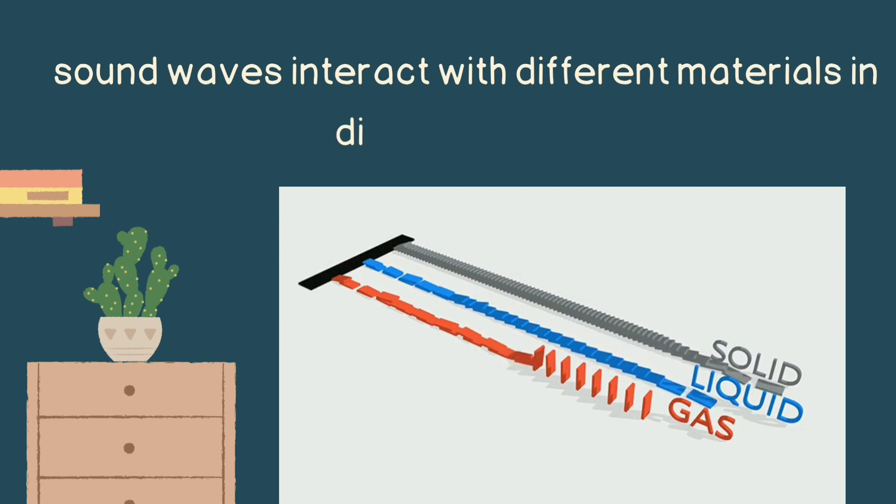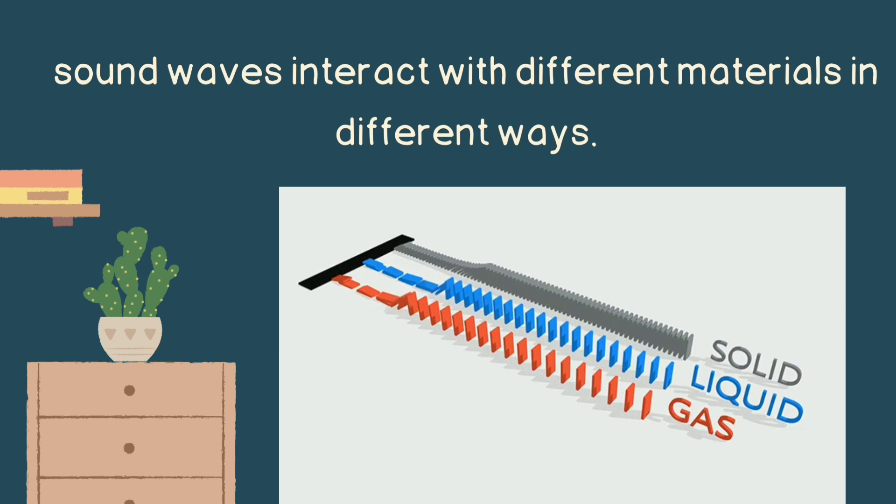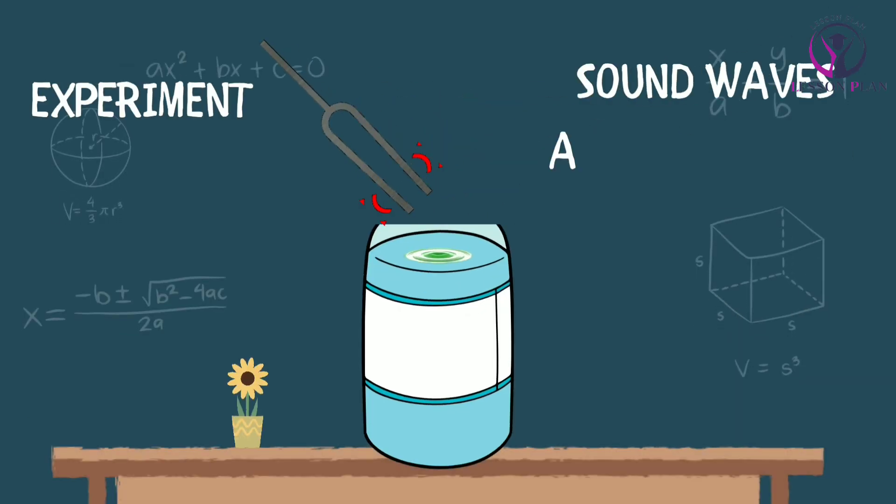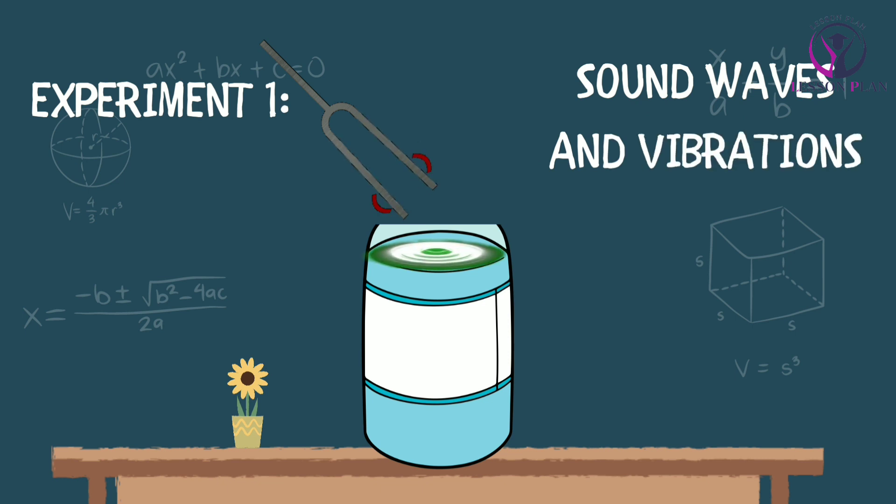Now we will conduct some fun experiments to help illustrate the concepts we have learned so far. Experiment one is about sound waves and vibrations. For this experiment, you will need a tuning fork and a plastic water bottle. First, fill the water bottle with enough water to cover the bottom, but not too much that it spills out when the bottle is tilted.